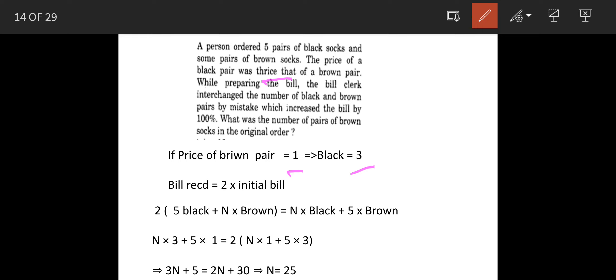The bill received is 2 times the initial amount or original order. The original order was 5 black and n brown, which became n black and 5 brown, resulting in the bill amount doubling.